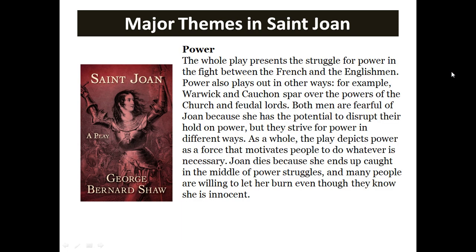Power. The whole play presents the struggle for power in the fight between the French and the Englishmen. Power also plays out in other ways. Warwick and Cauchon spar over the powers of the Church and feudal lords. Both men are fearful of Joan because she has the potential to disrupt their hold on power. But they strive for power in different ways. The play depicts power as a force that motivates people to do whatever is necessary. Joan dies because she ends up caught in the middle of power struggles, and many people are willing to let her burn even though they know she is innocent.